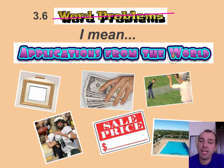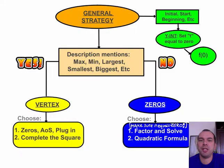Alright guys, let's talk about some applications from the real world, as opposed to studying word problems. Here's the general strategy. General strategy says that if I have anything asking me for initial, start, or beginning, then basically I'm being asked to find the y-intercept. And I do that by plugging f at 0, so setting the variable equal to 0.